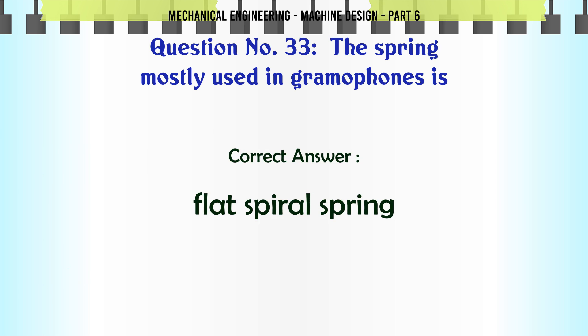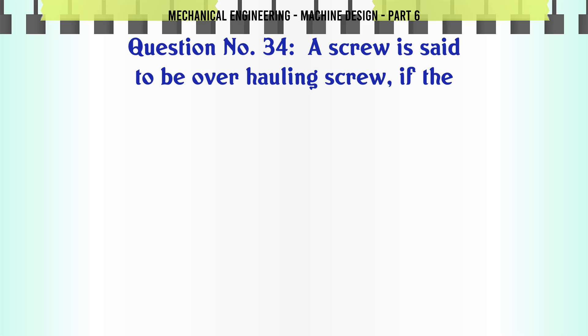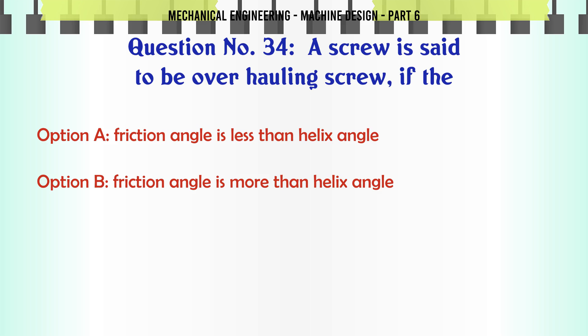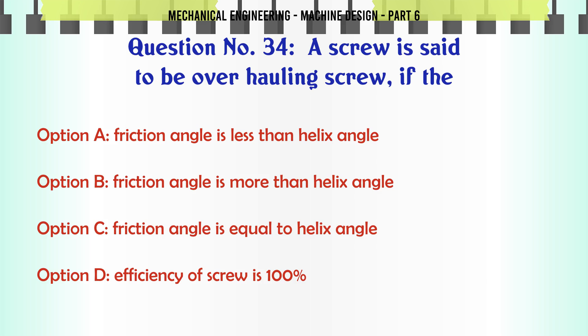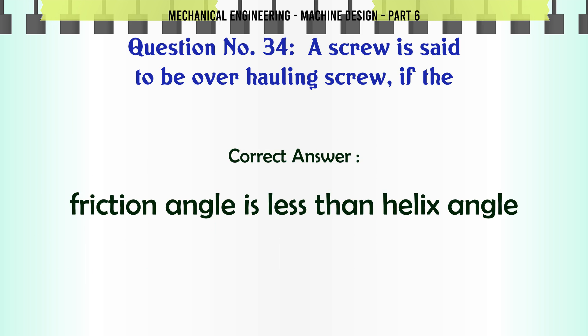A screw is said to be overhauling screw if the: A) friction angle is less than helix angle, B) friction angle is more than helix angle, C) friction angle is equal to helix angle, D) efficiency of screw is 100%. The correct answer is friction angle is less than helix angle.